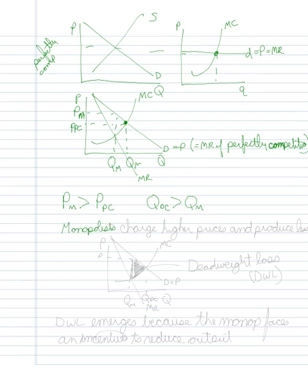What is our conclusion from this graph? Monopolists charge higher prices and produce less stuff. And we can see that right here, that the monopolists are charging higher prices and producing less.